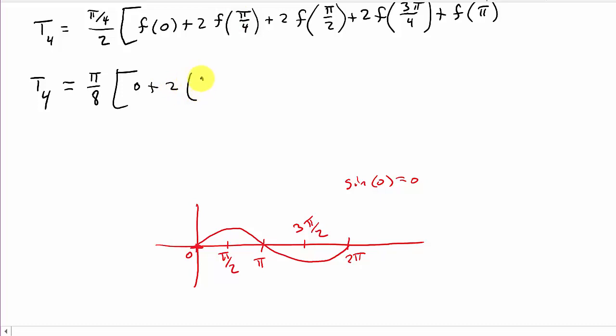Plus 2 times, and then π over 4, well, that's one you've got to remember, that's square root of 2 over 2, and then we've got plus 2 times f of π over 2, well, what is the sine of π over 2? There's π over 2, what's sine? It's 1. So that's times 1.